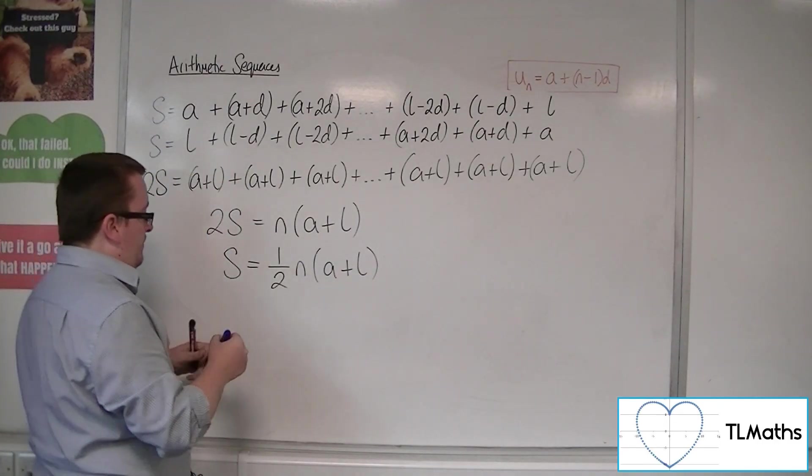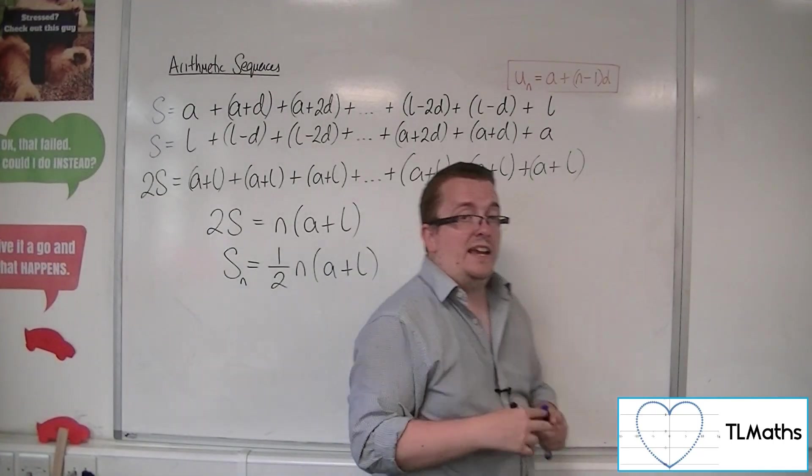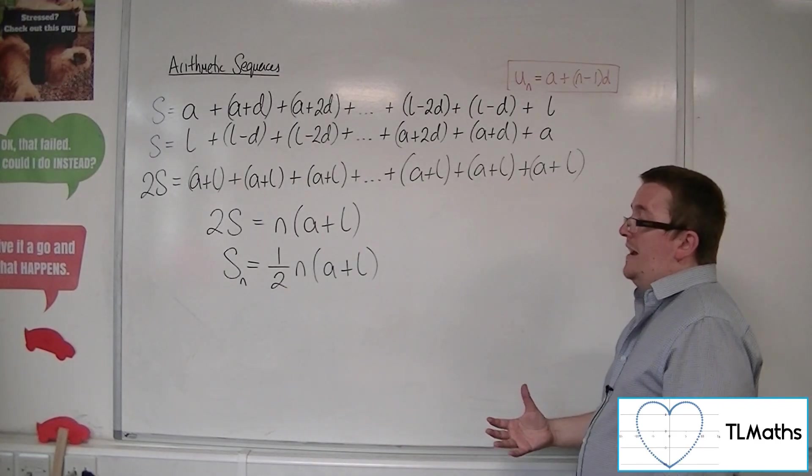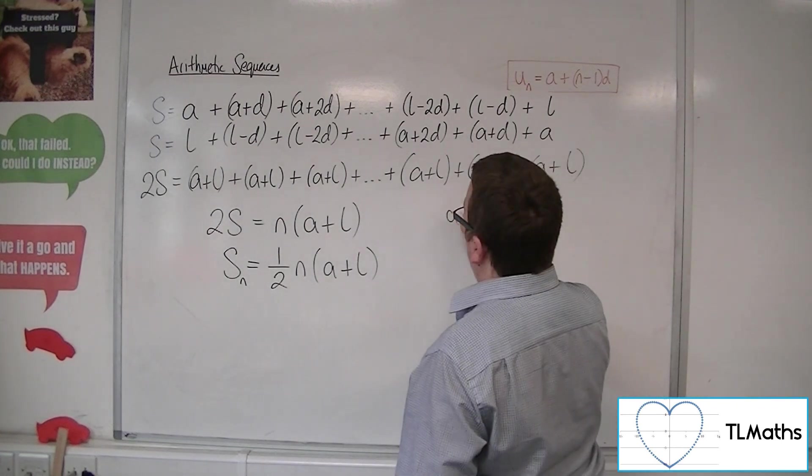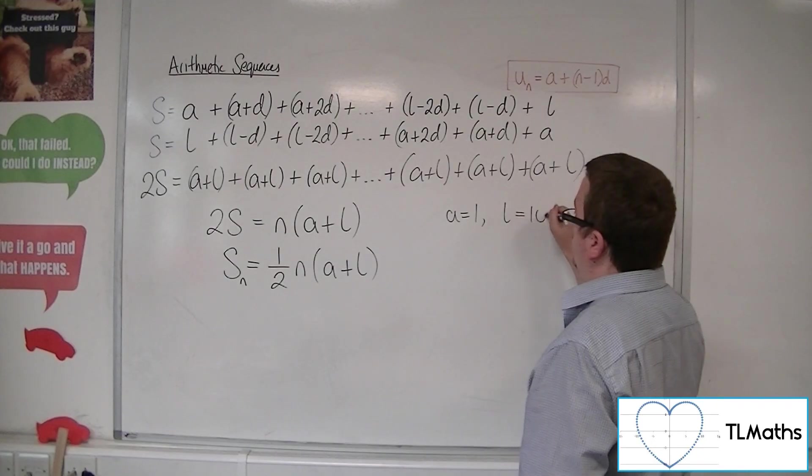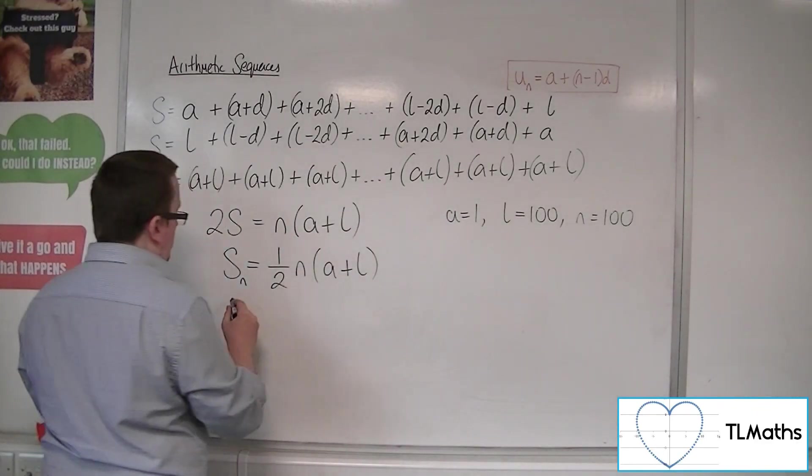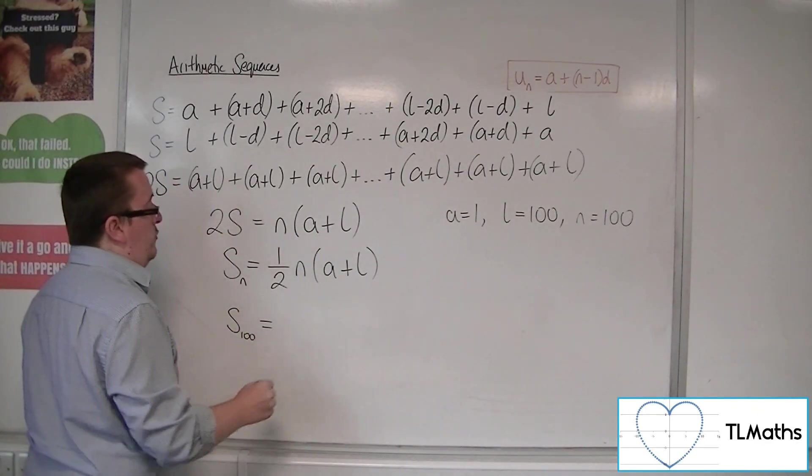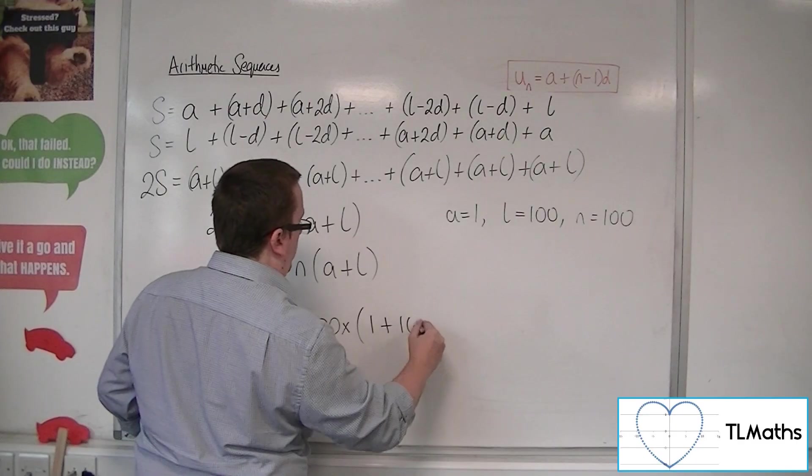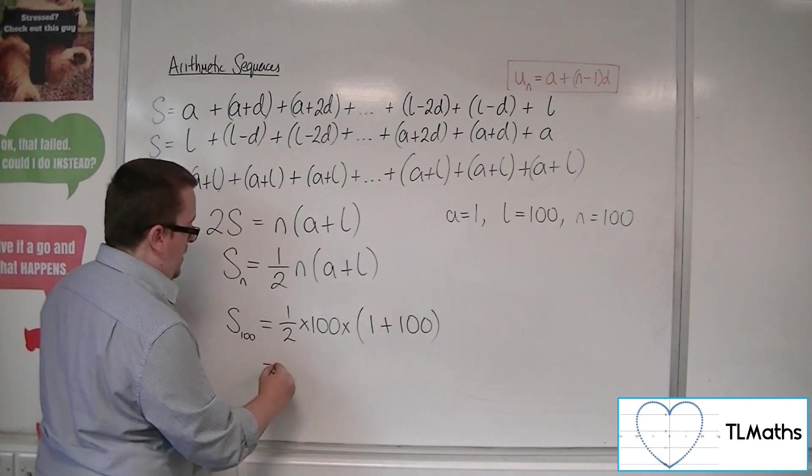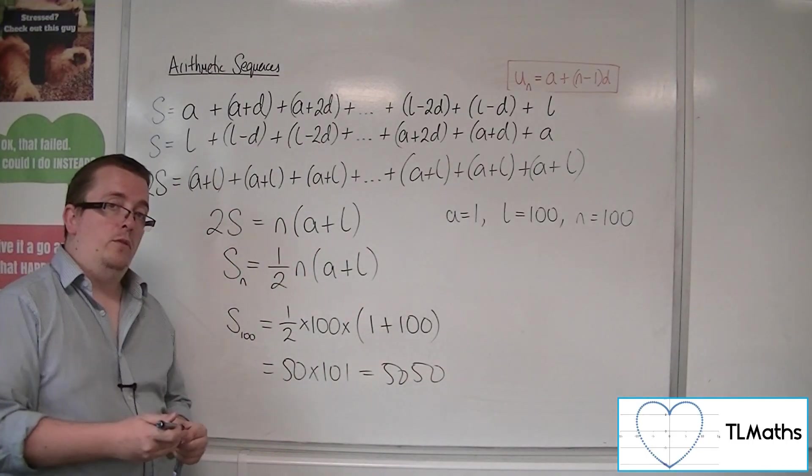Now, so the sum to n terms, we can write in this nice, succinct way. So when we were looking to add up the first 100 terms, from 1 up to 100, we had that the first term was 1, the last term was 100, and the number of terms was 100. So you could say that S₁₀₀, the sum to the first 100 terms, was 1/2 times 100 times (1 + 100), which gives you the 50 times 101, which is the 5050 that we had before.